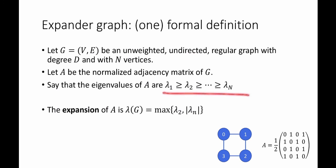The eigenvalues of A are lambda 1 through lambda n. We just saw that lambda 1 was equal to 1. And we see that the expansion parameter of A is lambda of G, which is defined as the maximum of lambda 2, the second largest eigenvector, and the absolute value of lambda n.